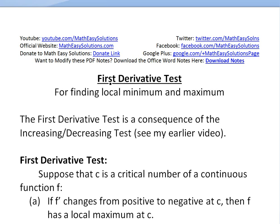Hi, it's time for another Math Easy Solution to discuss the first derivative test, which is basically used for finding local minimum and maximum. I'll go over it and do some examples in later videos. The first derivative test is basically a consequence of the increasing and decreasing test — you can see my earlier video on that.